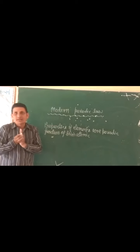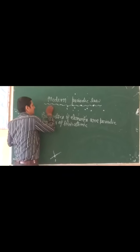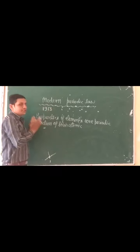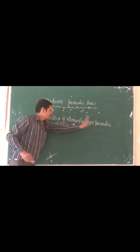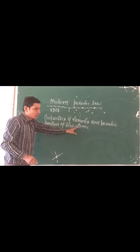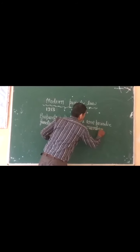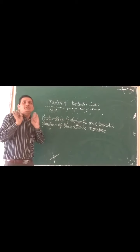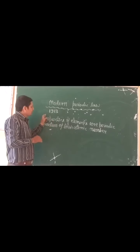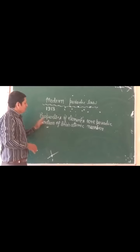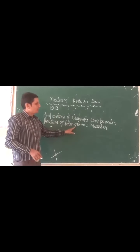This law was given by John Henry Moseley in 1913. According to this law, properties of elements are a periodic function of their atomic number.